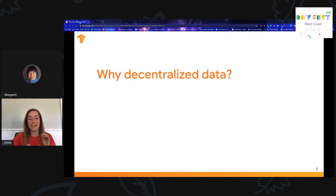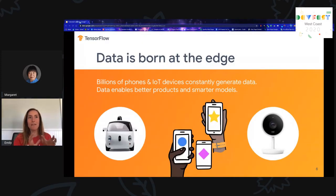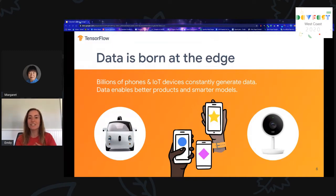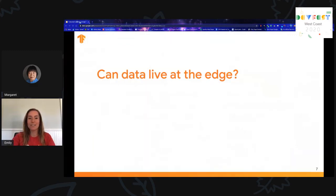So why is decentralized data interesting? Decentralized data is everywhere. There are billions of phones and Internet of Things devices constantly generating data. Smartphones themselves are, in a sense, the world's largest supercomputer — it's interesting to think of them as decentralized compute nodes. The decentralized data stored on these devices could enable better products and smarter models. So can we harness the power of these edge devices without centralizing the data?